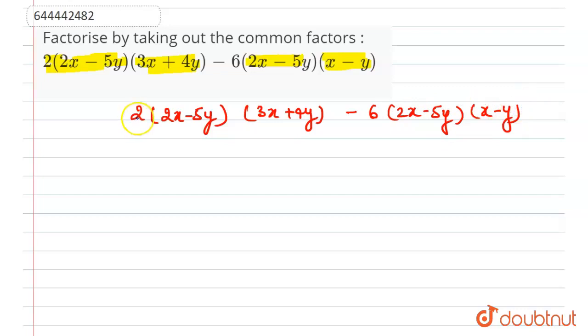We can see that the factor 2(2x - 5y) is common in this part also and in this part also. So we will take 2(2x - 5y) common.